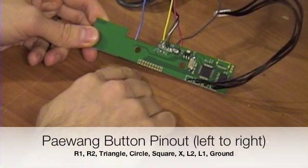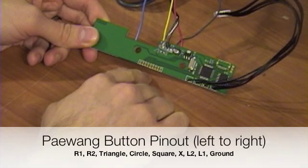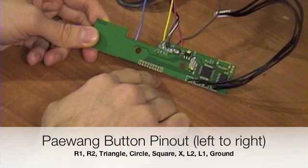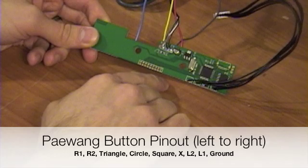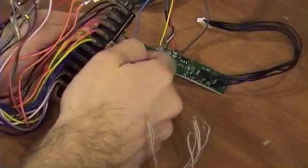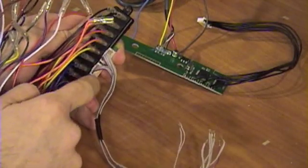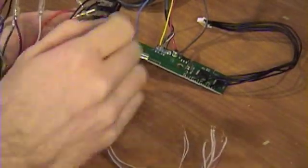The Paewang goes R1, R2, triangle, circle, square, X, L2, L1, and then ground. So I'm just going to go ahead and solder these through. One little thing before I get started, to make this easier, I'm just going to pull these out of here, you didn't even need to remove this from your stick.